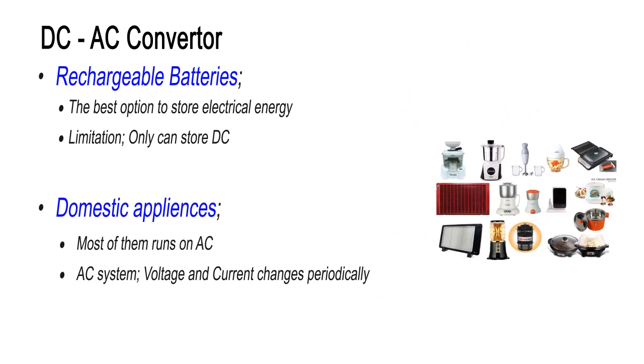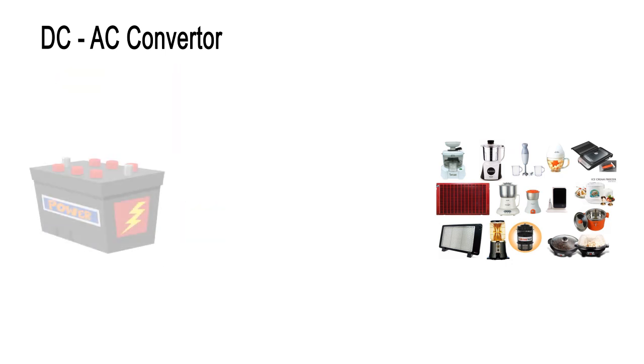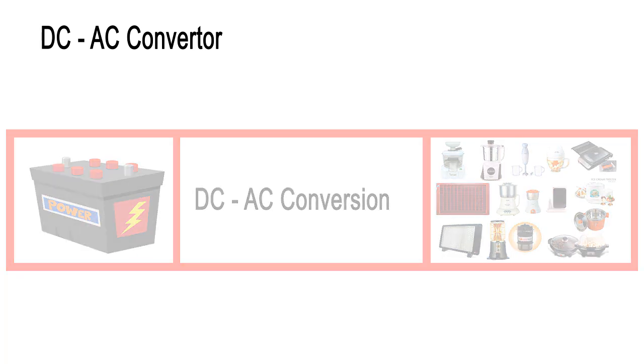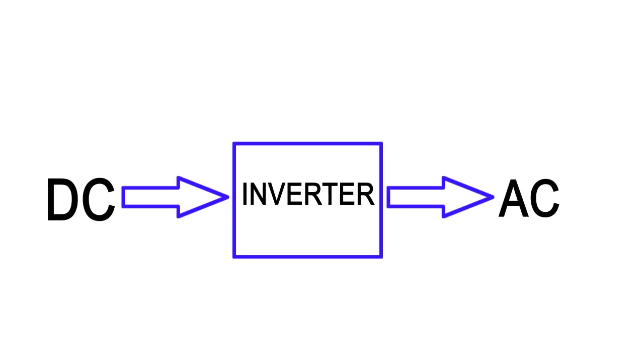So to run these AC equipments through batteries, a conversion is required known as DC to AC Conversion or Inversion. The circuit used for this purpose is popularly known as an Inverter.